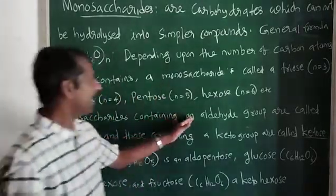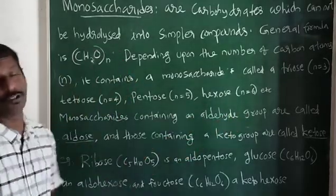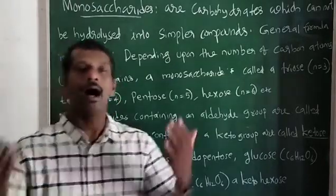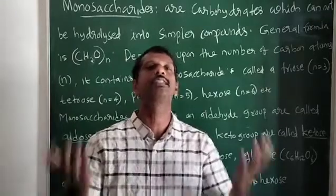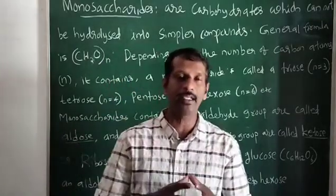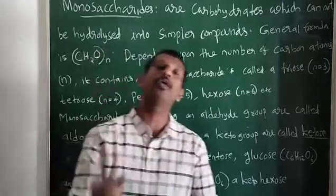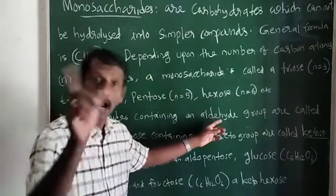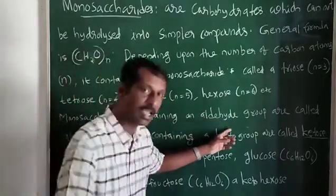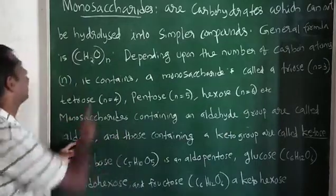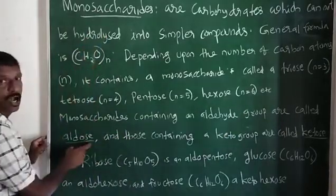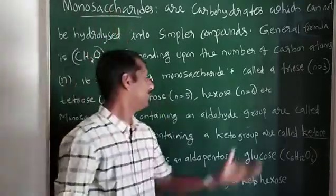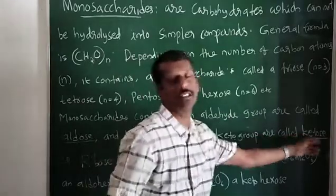Monosaccharides containing an aldehyde group are called aldose. Since carbohydrates are polyhydroxy aldehydes or polyhydroxy ketones, if the monosaccharide contains an aldehyde group — that is, if it is a polyhydroxy aldehyde — then that type of monosaccharide is known as aldose. If the monosaccharide contains a keto group, then it is known as ketose.